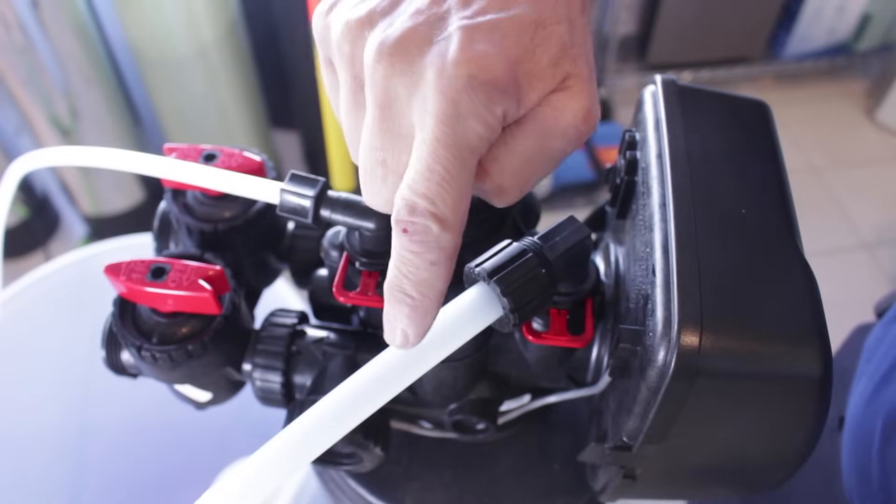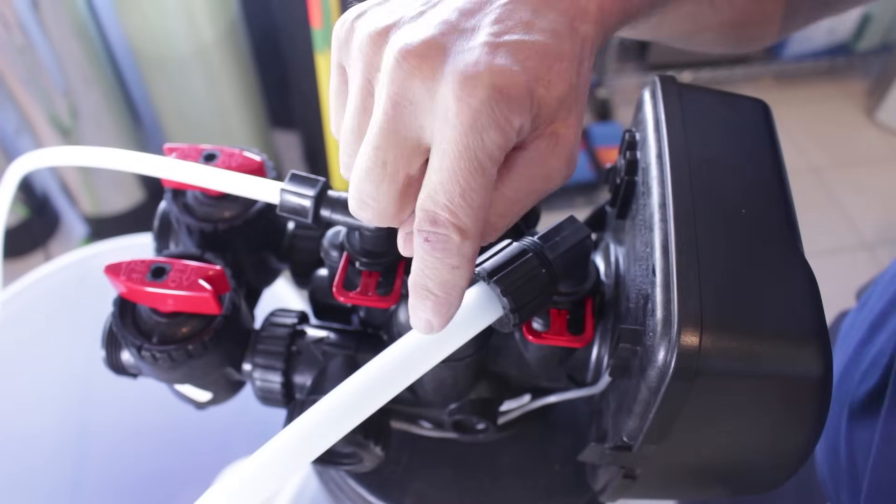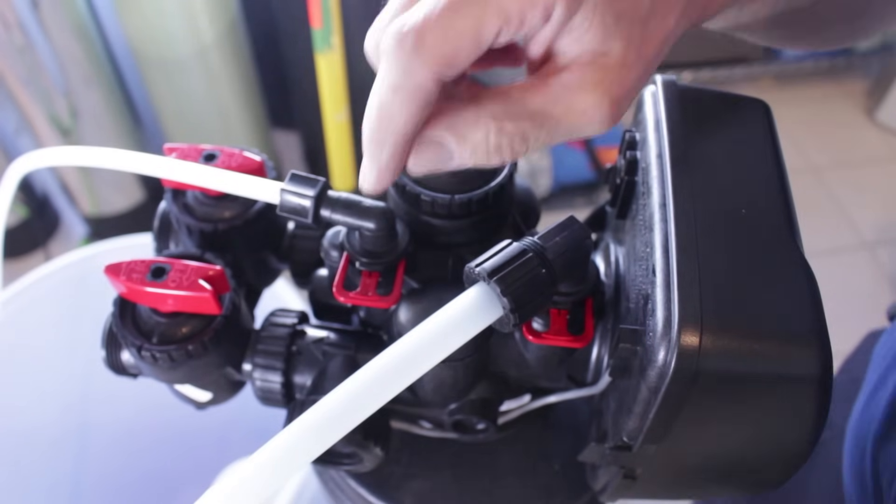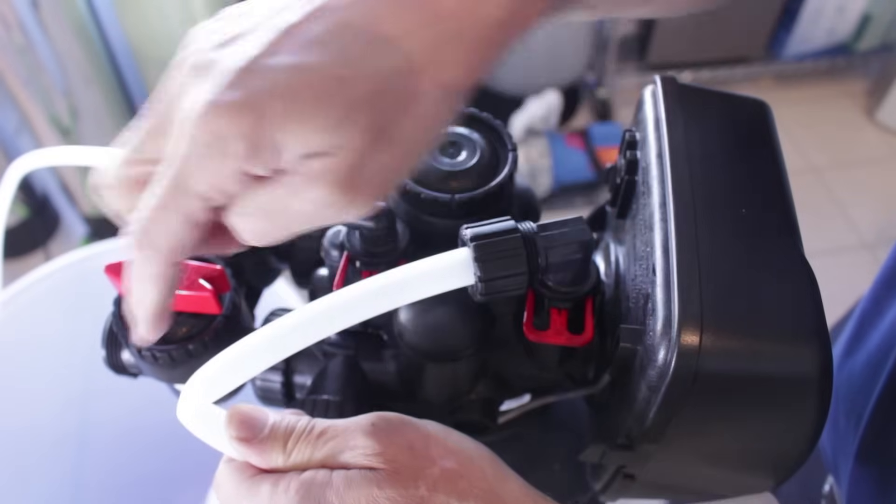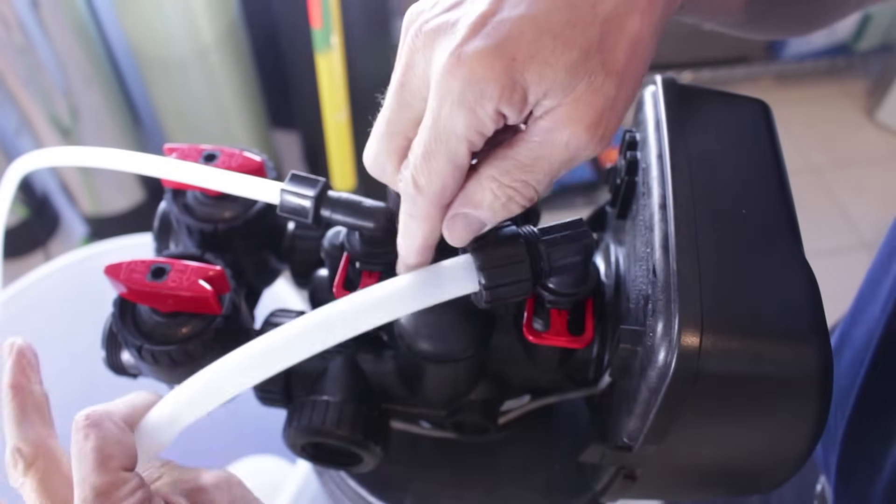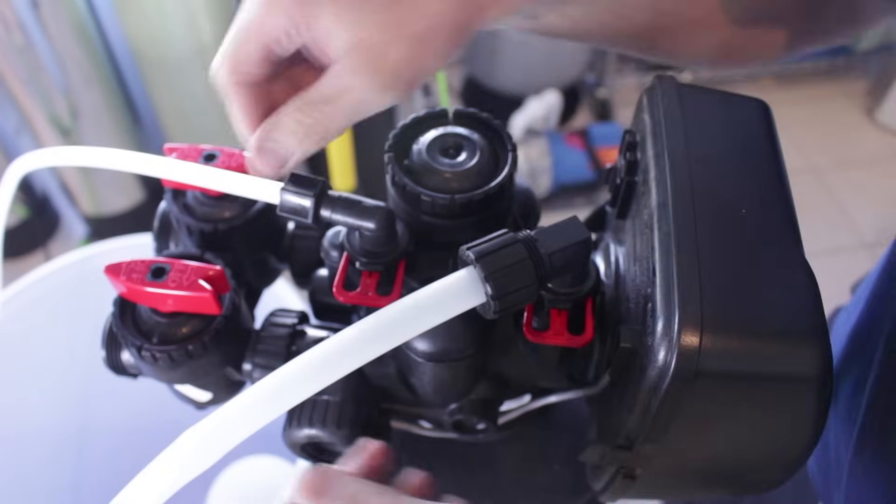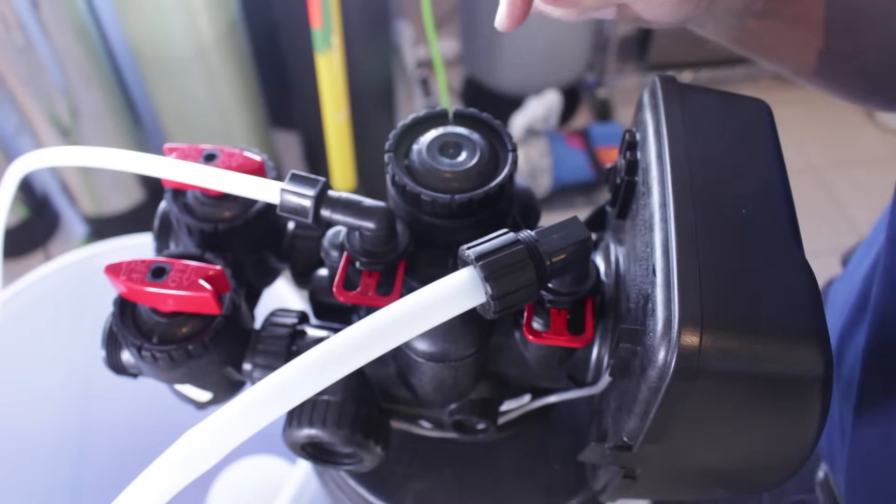The next thing to check is that the drain line isn't clogged or frozen. Also, if there's a kink in the drain line it would restrict the flow enough that it wouldn't draw brine through the brine line. Make sure you check that.